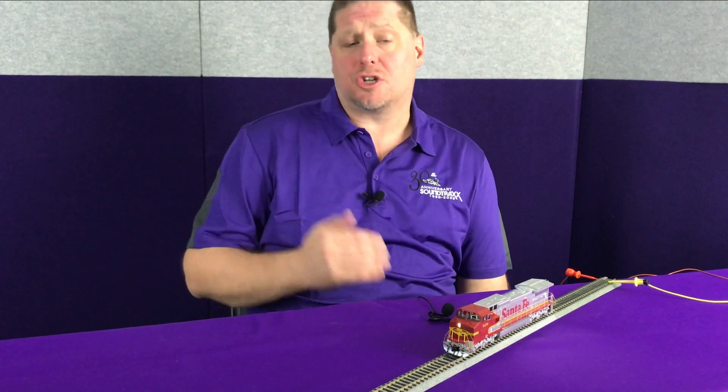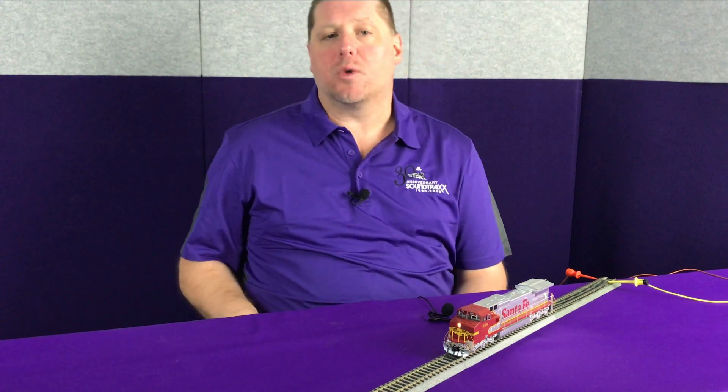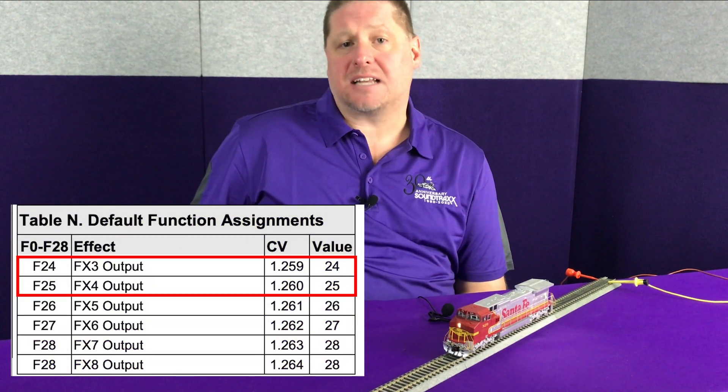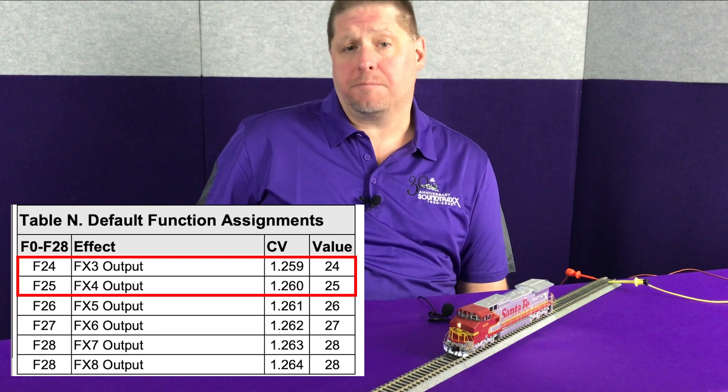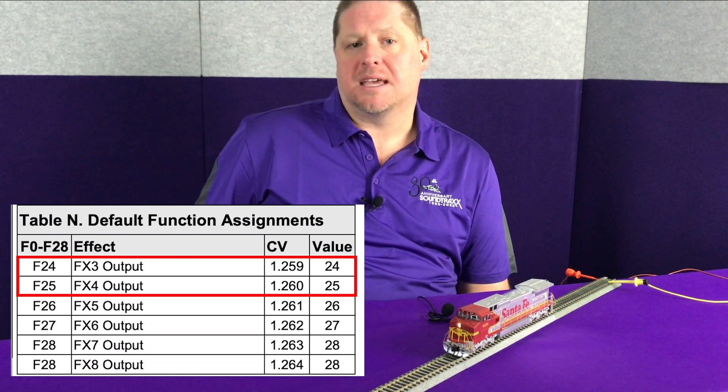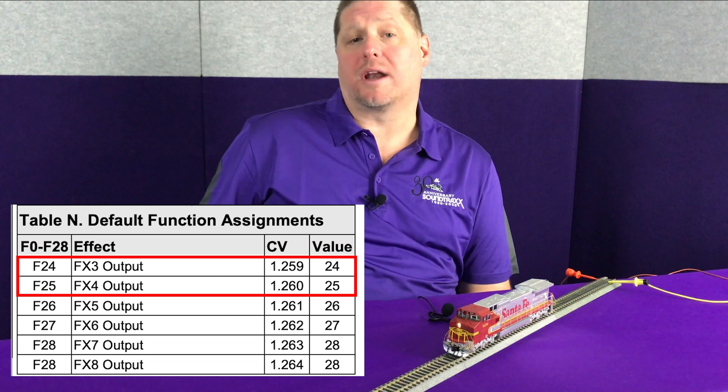Function mapping refers to controlling the lights on and off, or the sound effects on and off, with specific buttons. It allows us to determine the control of the light or sound effect by which buttons on our throttle we want to use. Now by default, the FX3 lighting effect is activated by function 24, and the FX4 lighting effect is illuminated with button 25.